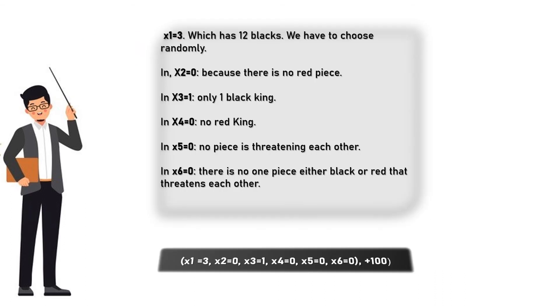Let's take x1 equals 3, which has 12 blacks we have to choose randomly. In x2 equals 0 because there is no red piece. In x3 equals 1, only one black king.